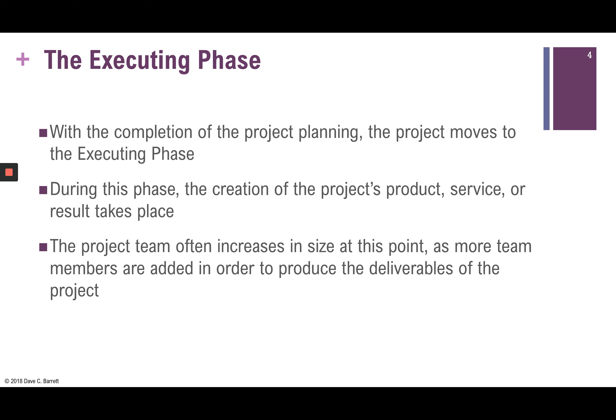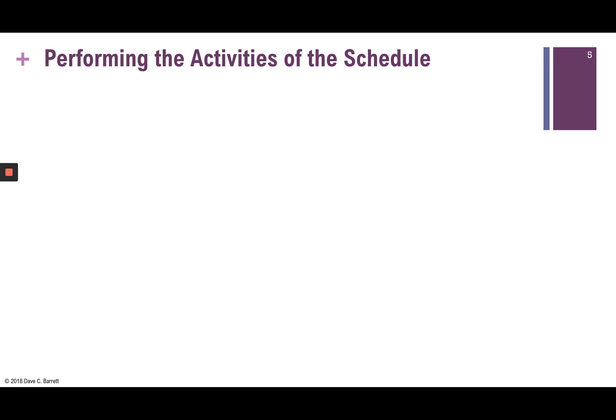More team members are often needed in order to produce the deliverables of the project, so we often see a dramatic increase in the number of team members as well as the costs incurred during the executing phase. The first thing that happens during this phase is we perform the activities of the schedule.